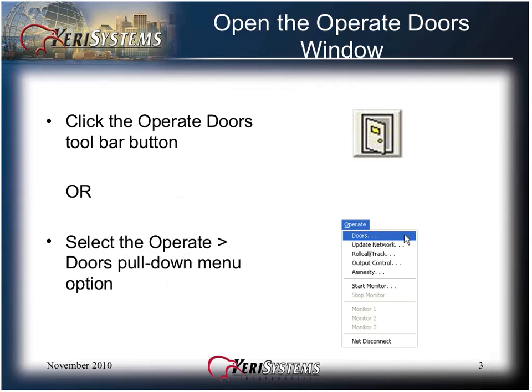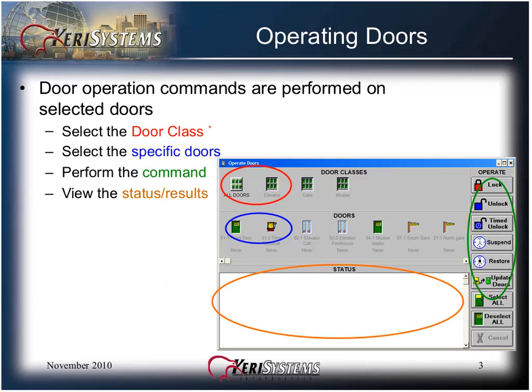To open the Operate Doors window, click on the toolbar button or select from the Operate pull-down menu and click on Doors. Door operation commands are performed on selected doors. Select the door class — the door class 'All Doors' is available by default. Other door classes will appear only if configured in the Setup System Doors tab. Select the specific doors, perform the command from the column buttons on the right, and view the status results in the status window below.